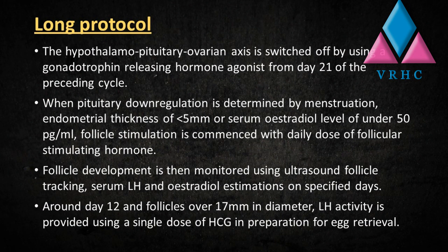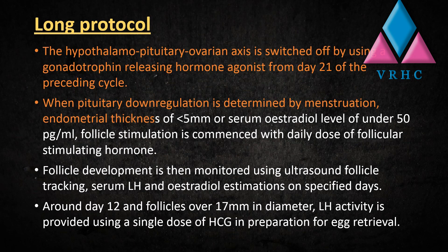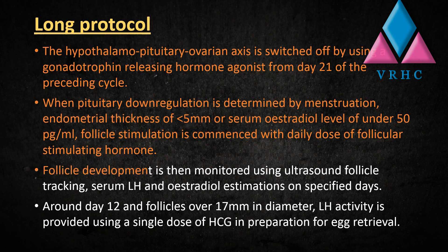In the long protocol used for ovarian stimulation, the hypothalamo-pituitary-ovarian axis is switched off by using a gonadotropin-releasing hormone agonist from day 21 of the preceding cycle. When pituitary down-regulation is confirmed by menstruation, endometrial thickness of less than 5 mm, and a serum estradiol level of under 50 pg/mL, follicle stimulation is commenced with a daily dose of follicle-stimulating hormone.